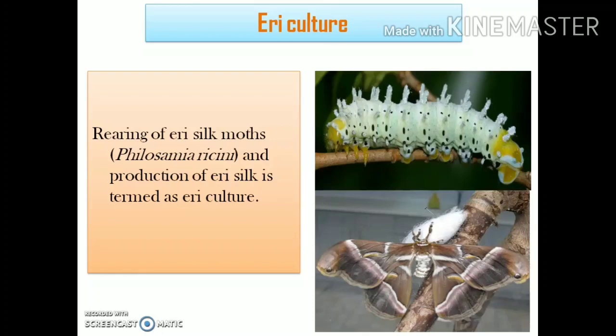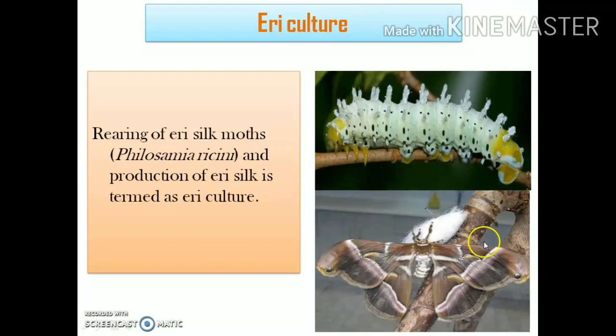Now let us move to Eri culture. Eri culture refers to the culturing and rearing of Eri silk moths and the production of Eri silk. The scientific name of the Eri silk moth is Phyllosemia ricini, sometimes also termed Samia ricini. Here are two pictures — one showing the larval stage of the Eri silkworm, and one showing the adult Eri moth.